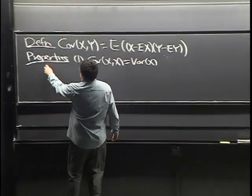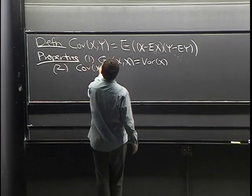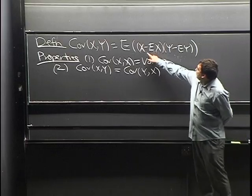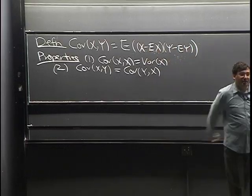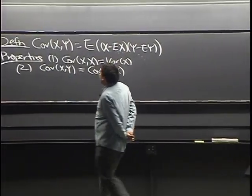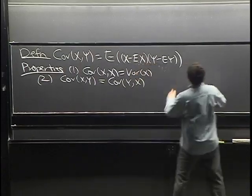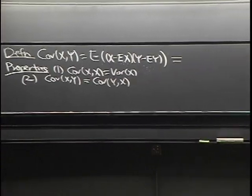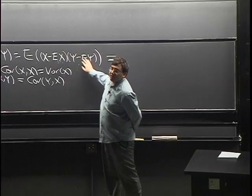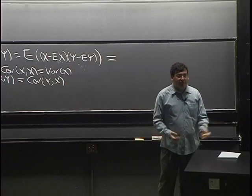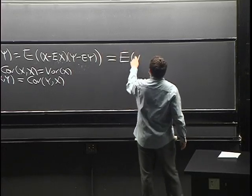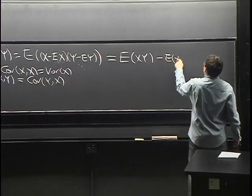Secondly, covariance is symmetric: Cov(X, Y) = Cov(Y, X). You can see this immediately — just swap X and Y, and it's the same thing. The alternative way to write covariance — completely analogous to the alternative formula for variance — is: Cov(X, Y) = E[XY] − E[X]E[Y]. In general these two quantities E[XY] and E[X]E[Y] are not equal; we proved they are equal if X and Y are independent, but in general they're not.